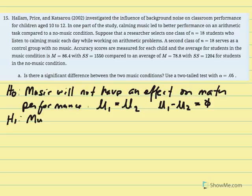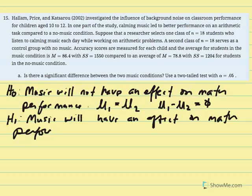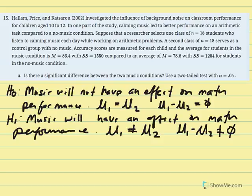The research hypothesis says music will have an effect on math performance, and therefore population 1 is not equal to population 2. We can write this as: population 1 minus population 2 is not equal to zero. Even though the study mentions better performance, we're instructed to conduct a two-tailed test, so the null uses 'equal to' and the research hypothesis uses 'not equal to.'